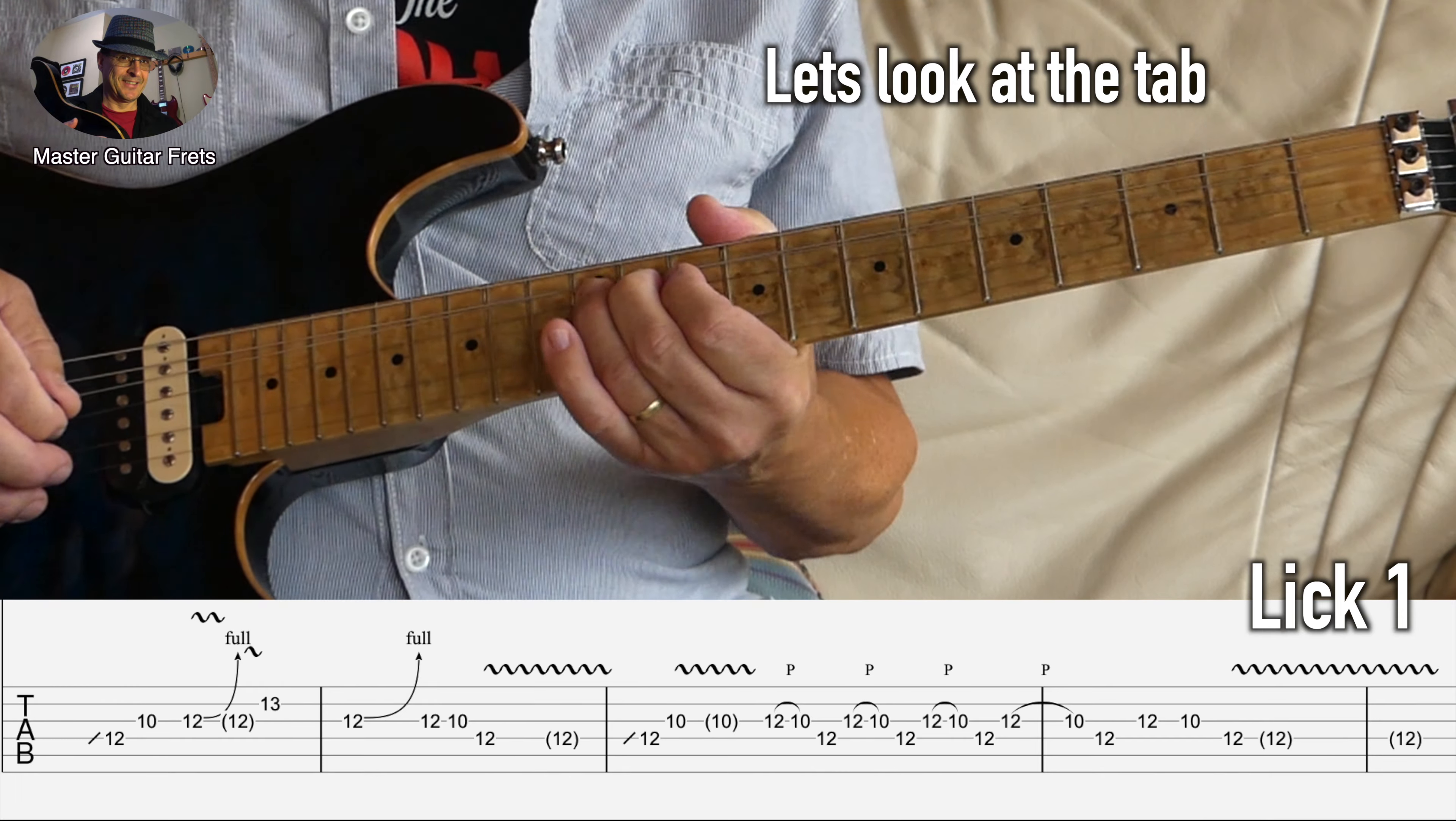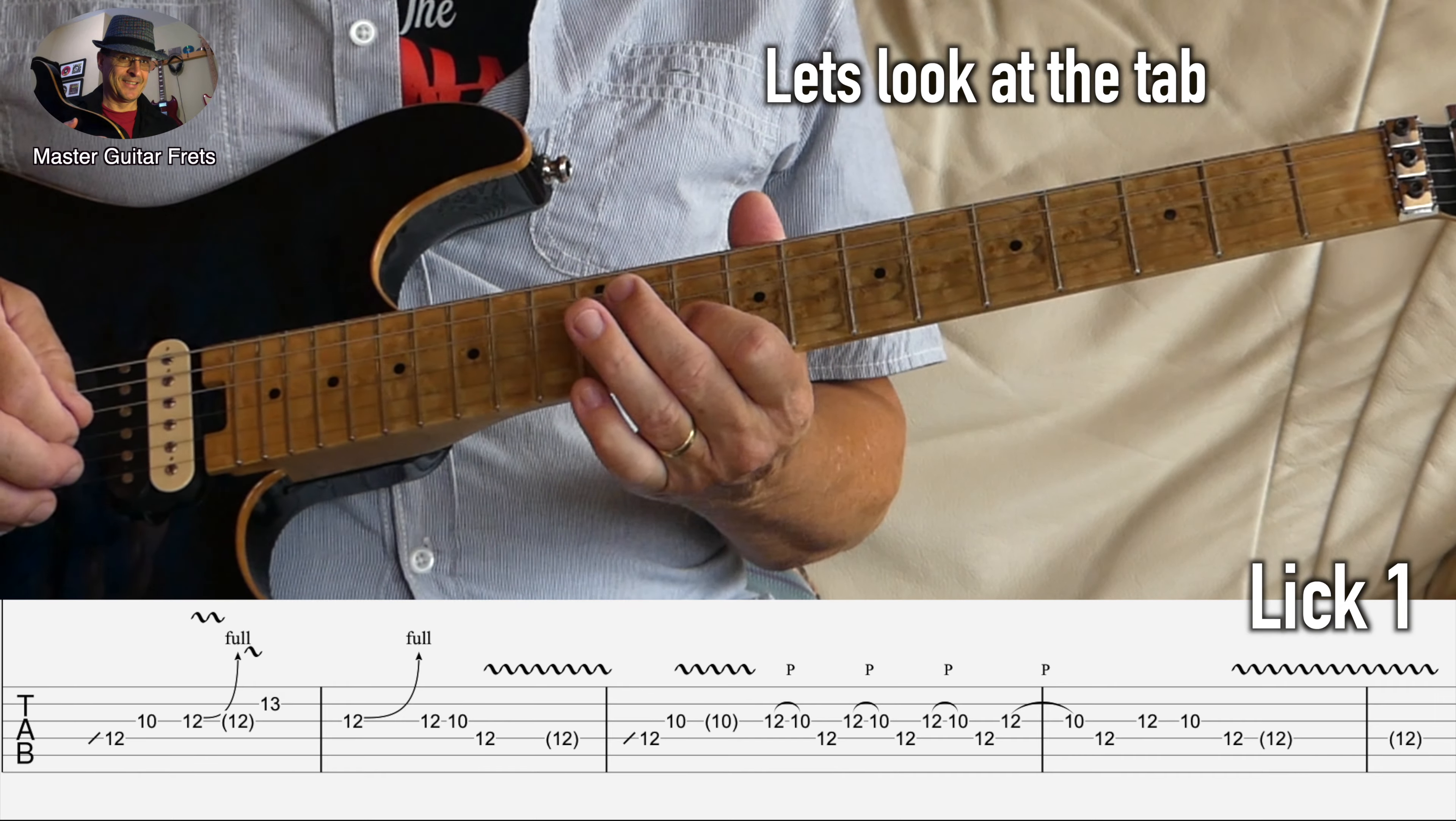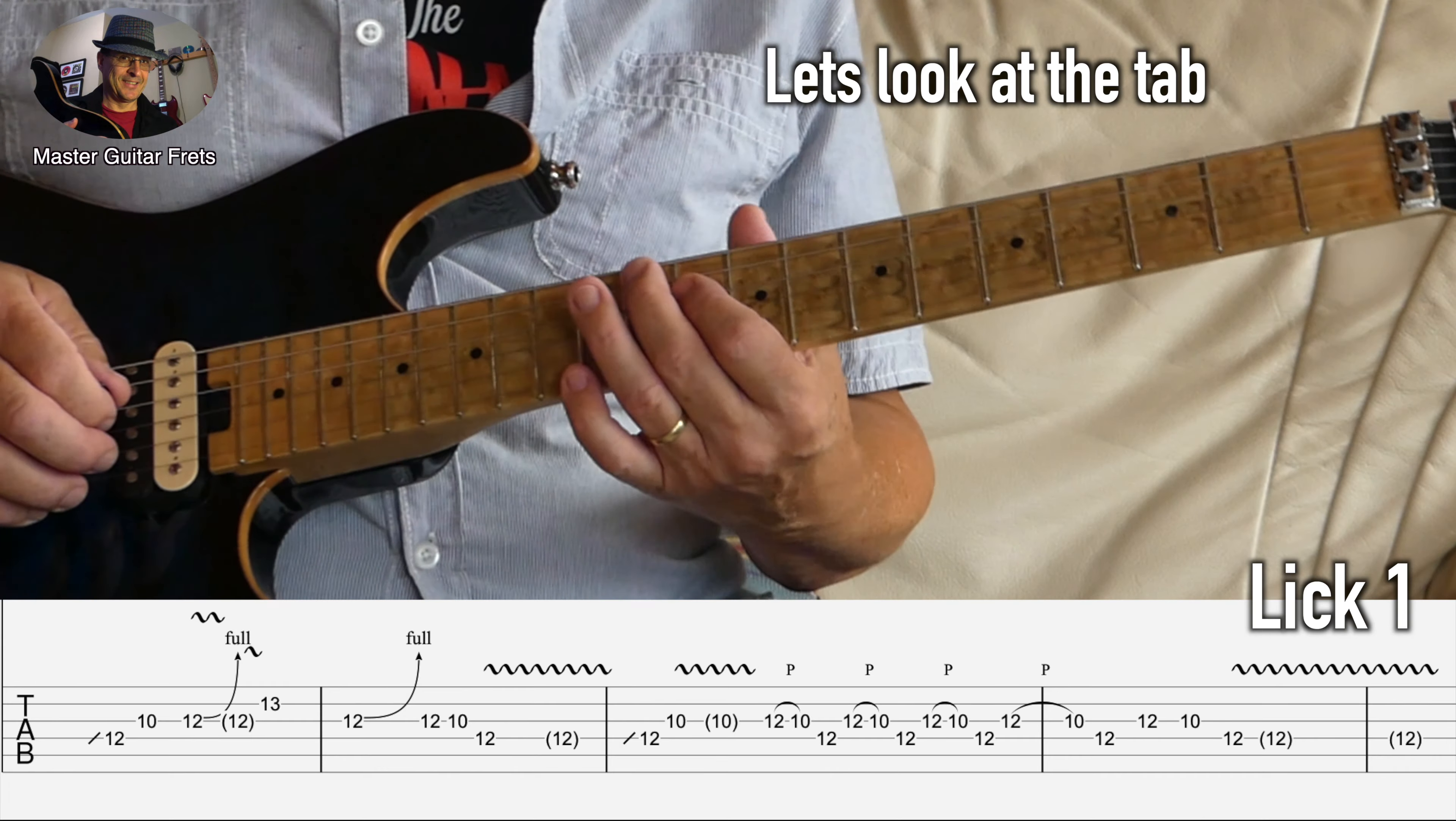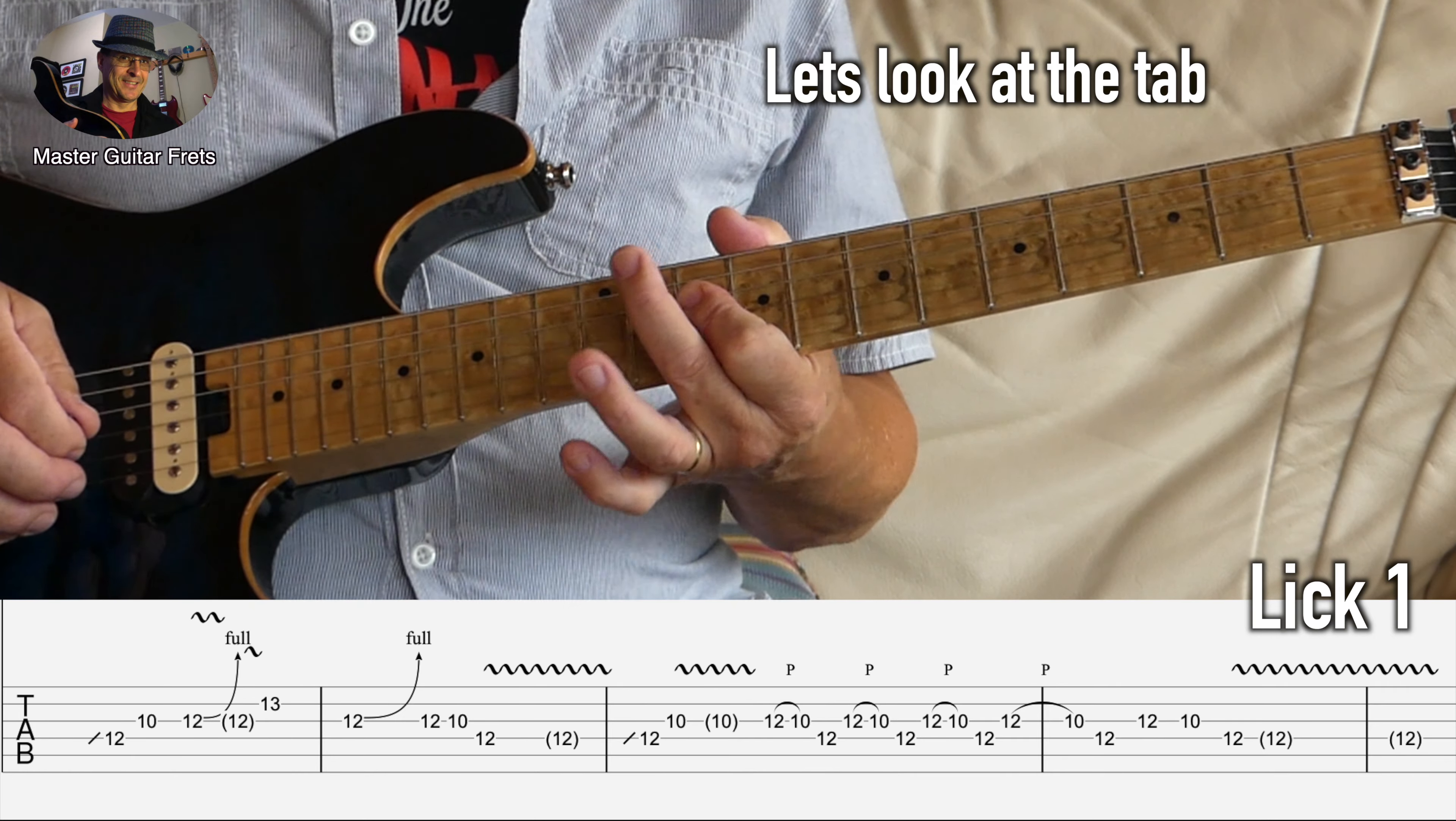Then the next part of this little lick is a hammer-on from D10 to D12 and finish on G10. And then when you do that, keep your index finger to bar both the D and the G string because you're going to do this little finishing lick.